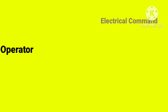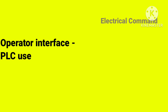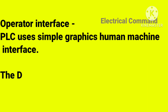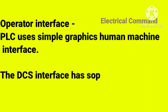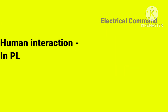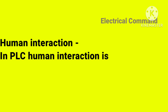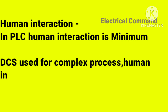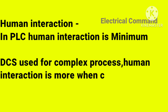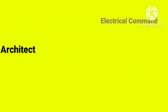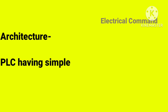Operator interface: PLC uses a simple graphical human-machine interface, and human interaction is minimum. DCS has sophisticated graphics for human interaction, and since DCS is used for complex processes, human interaction is more when compared to PLC.